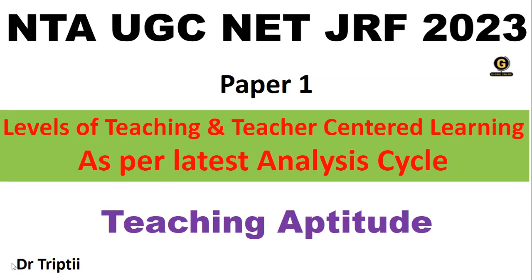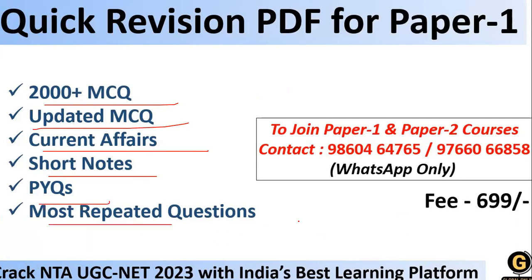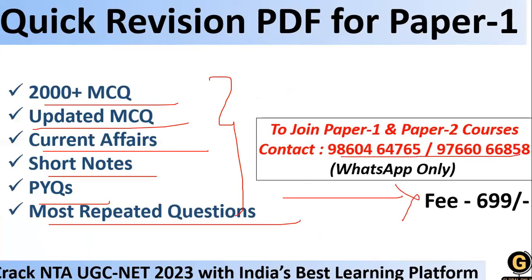A very important thing before we start the session for the day. In case you are looking for a revision PDF for Paper 1, Global Online is providing a revision PDF consisting of 2000-plus MCQs, updated MCQs, current affairs, short notes, previous year question papers, and most repeated questions. These are all available at a cost of Rs. 699. You can get in touch with us on the given WhatsApp number to get a copy of the PDF.